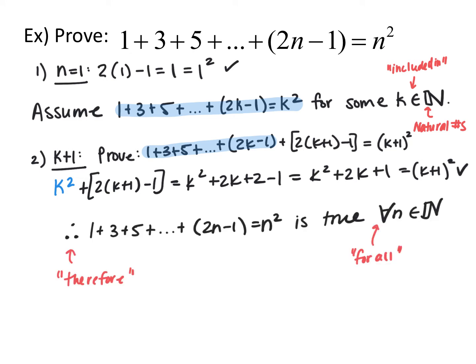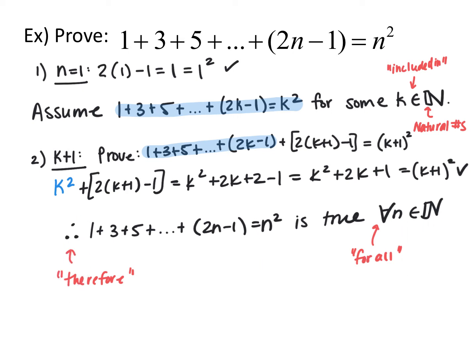Our last statement says: since we proved it's true for 1 and proved it's true for k plus 1, therefore it must be true for all n in the natural numbers. The three-dot triangle means 'therefore' and the upside-down A means 'for all.' Since k can be anything, we've now proved it's true for all natural numbers.